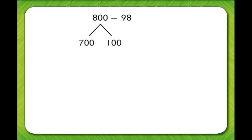It is easier to subtract 98 from 100 than 800. 100 minus 98 equals 2. 700 plus 2 equals 702.